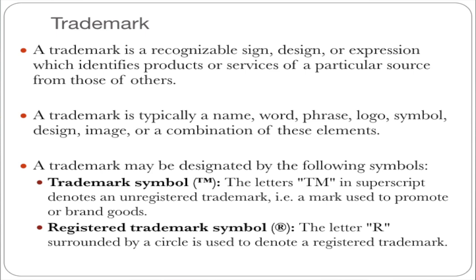A trademark generally has two types. The first is a registered trademark, represented by the R symbol. The second is an unregistered trademark, represented by the TM symbol.